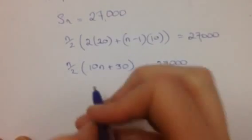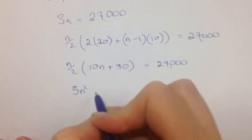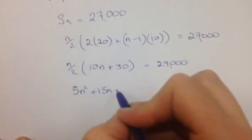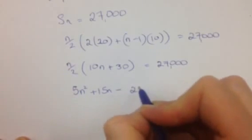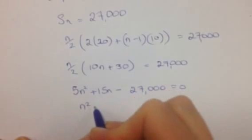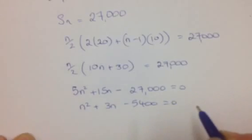And you can multiply that out and move it around and eventually I'll end up with a trinomial that looks like 5n squared plus 15n minus 27,000 equals 0. And then just simplify that n squared plus 3n minus 5,400 is equal to 0.